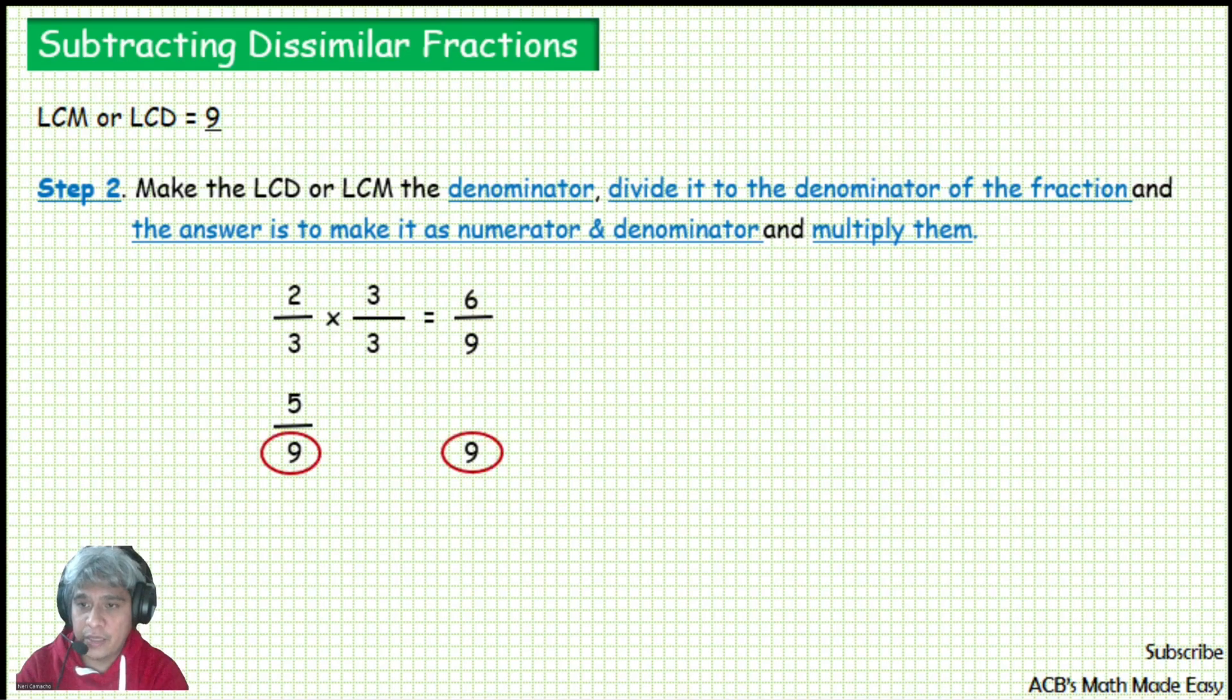9 divided by 9 is equal to 1. Make 1 also as its denominator. And multiply. 5 times 1 is equal to 5. And our answer is the same, 5 over 9, because its denominator is already 9.